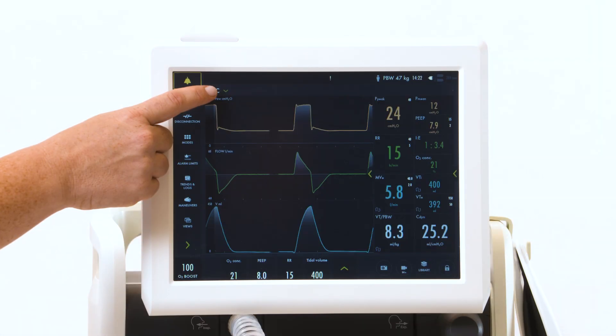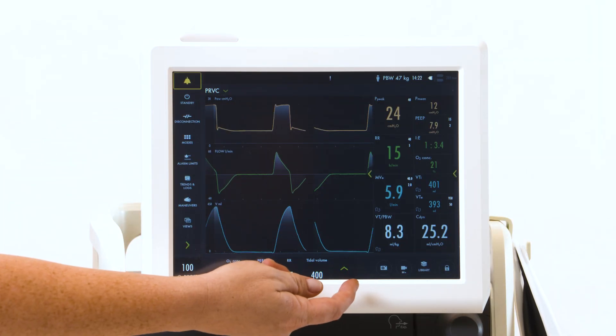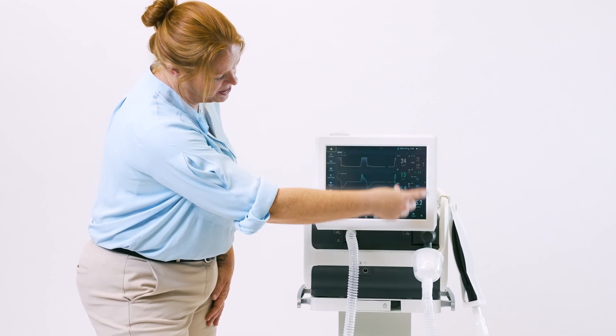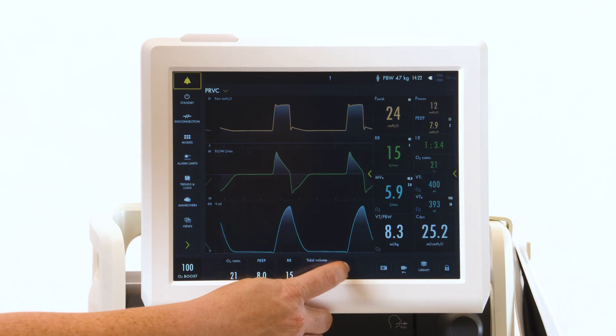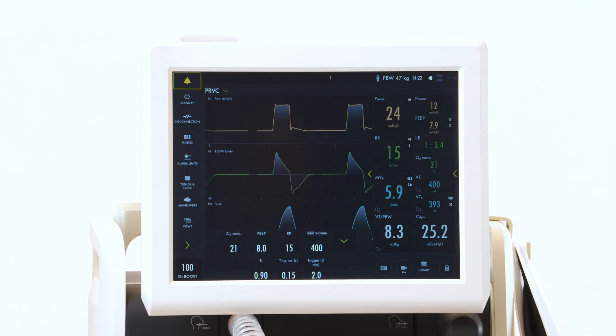Your patient mode is up here with your settings at the bottom. On the right are your measured values. Touch the arrow to open up your advanced settings.